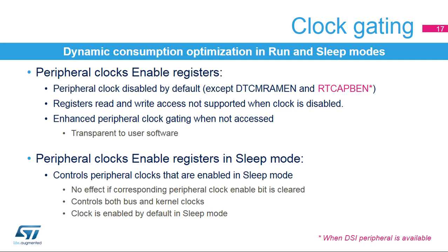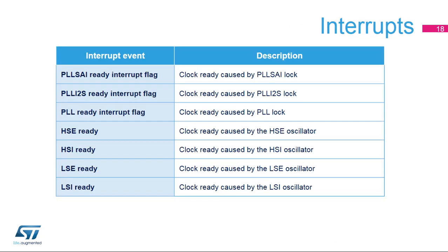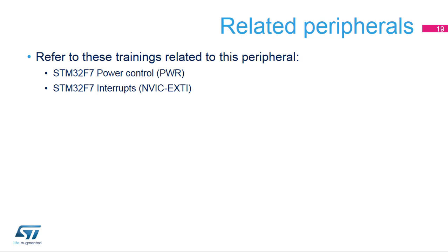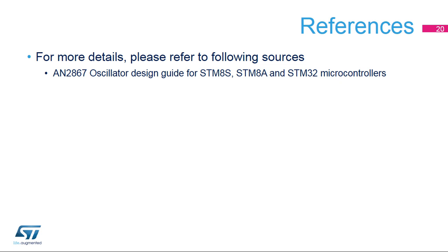These control bits have no effect if the corresponding peripheral clock is disabled. This slide lists the RCC interrupts. The PLLs ready and all oscillators ready signals can generate an interrupt. In addition to this training, you may find the power control and interrupt controller trainings useful. For more details, please refer to Application Note AN2867, an oscillator design guide for STM-8S, STM-8A, and STM32 microcontrollers.